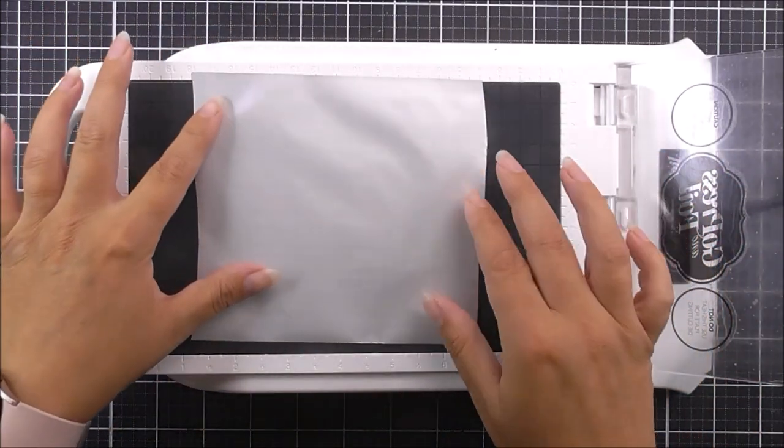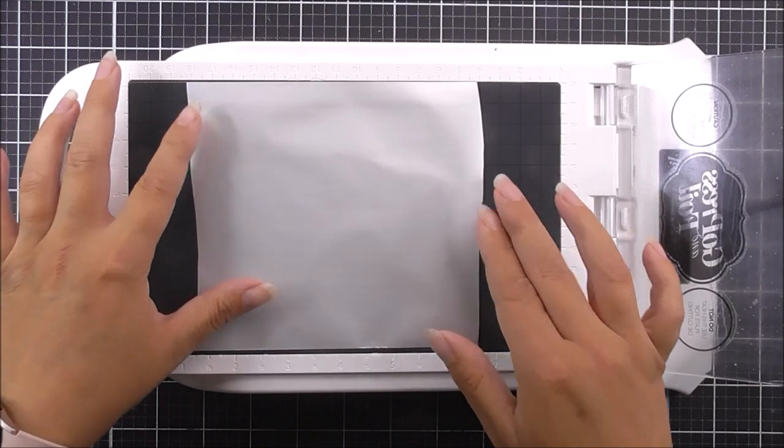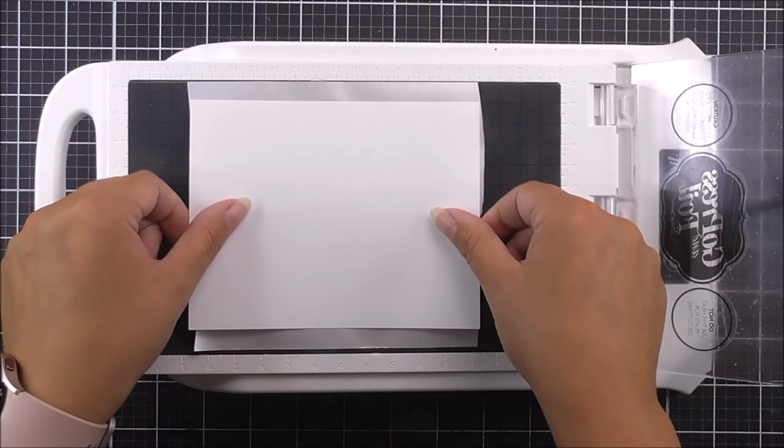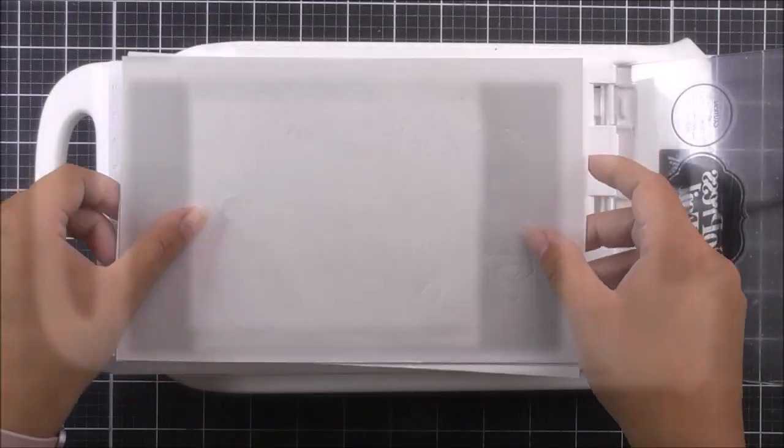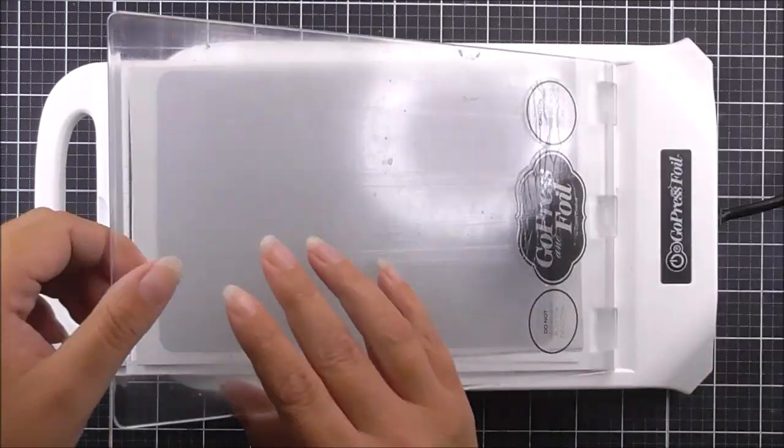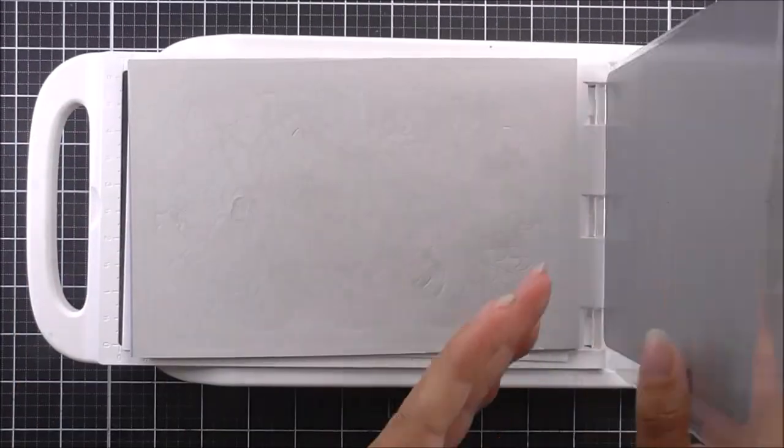I'm going to take some hot foil - this is the Enchanted Gold from Altenew - and I'm placing that shiny side down onto the hot foil plates. Then I'm going to add the piece of cardstock I wish to foil and then some shims. Remember, you don't need to add shims if you don't need them in your machine. I just know that I need a little bit more pressure on mine.